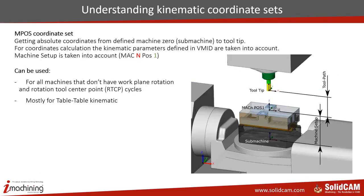Now let's go to some more advanced ones. Starting from the M-Pose set: the first thing to understand is that the M-Pose set always gives you absolute coordinates from machine zero to the tooltip. This coordinate set is used for the type of machine I showed earlier — for example the Haas. If you want to run that machine with five axes without smart cycles, in a table-table configuration, definitely use the M-Pose set.